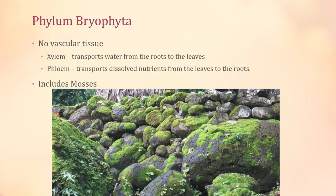Now we get into phylum Bryophyta. What makes these plants unique is that they are almost exclusively tiny plants because they do not have any vascular tissue. Where our vascular tissue is arteries and veins, plants have xylem and phloem. Xylem takes water from the roots as they absorb it from the soil and transports it through the rest of the plant; phloem goes in the opposite direction — think xylem as northbound, phloem as southbound.